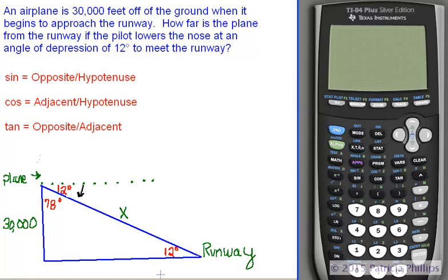So, since we have the hypotenuse labeled as x, and we have the adjacent side of the angle labeled as 30,000 feet, which of the trigonometric ratios, functions, might we be able to use in order to get the answer to this problem?